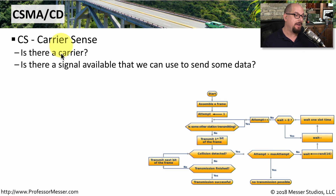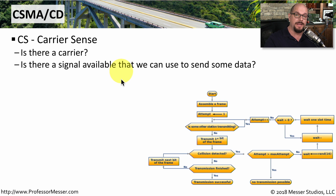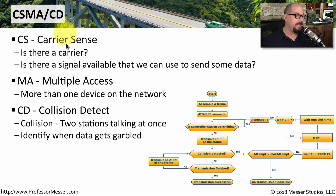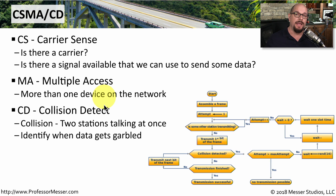The CS in CSMA stands for carrier sense — your ethernet adapter listens to see if there's a carrier available before sending. The MA stands for multiple access, meaning there's more than one device on this particular network. The CD stands for collision detect — if two devices communicate simultaneously and their information collides, those devices recognize the collision, identify that the data did not get through, and perform a random backoff function before trying to communicate again.